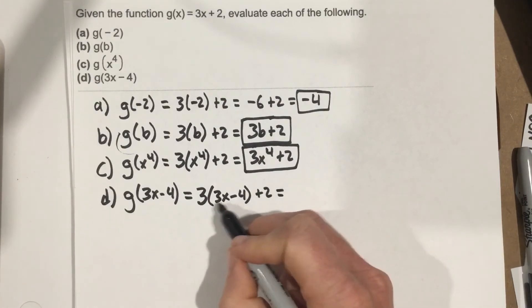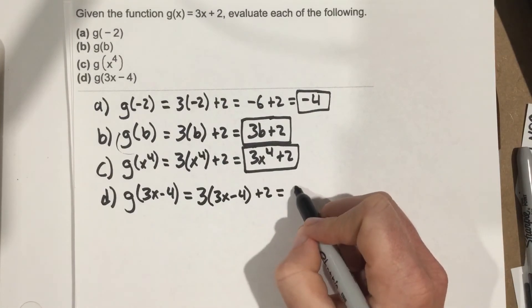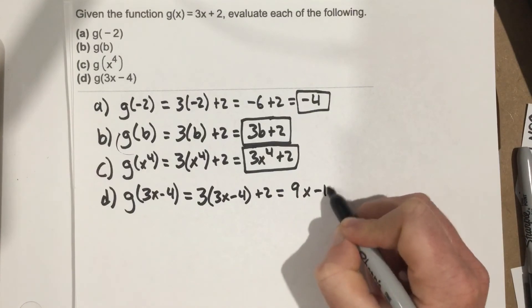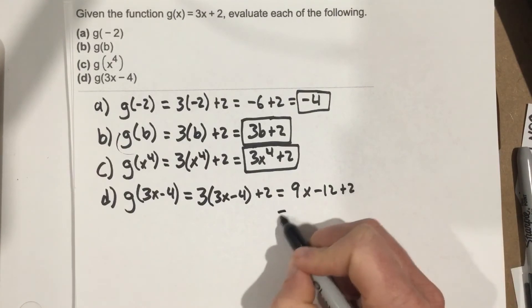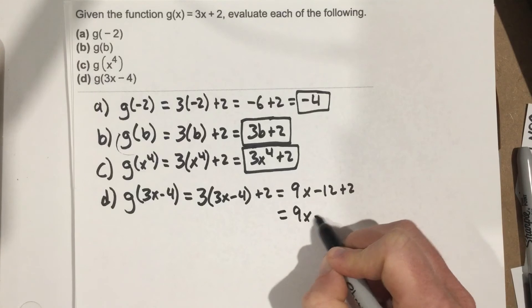So this gives you 9x minus 12 plus 2, which is 9x minus 10.